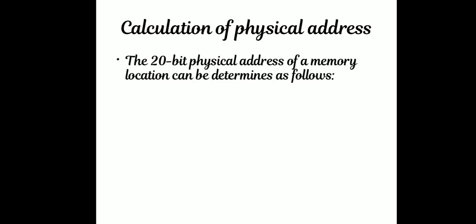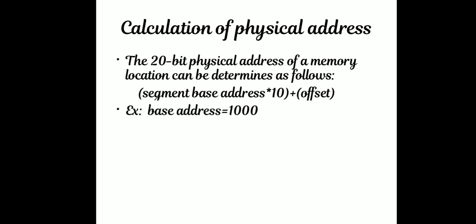How do we calculate the 20-bit physical address? It is easy. The 20-bit physical address of a memory location is determined as follows: segment base address multiplied by 10 (hex), plus the offset. That means we take the base address and add a zero LSB, making it 20 bits, then add the offset.